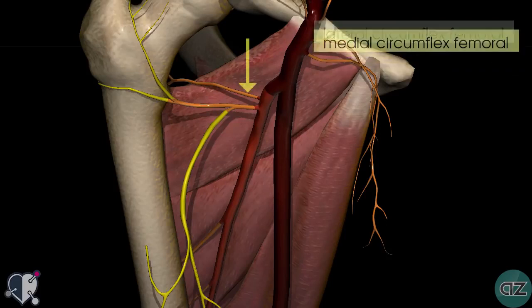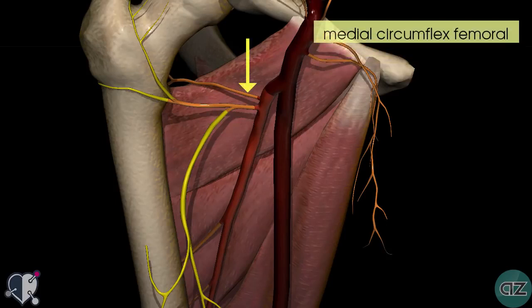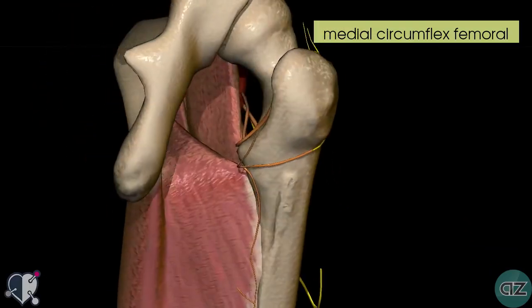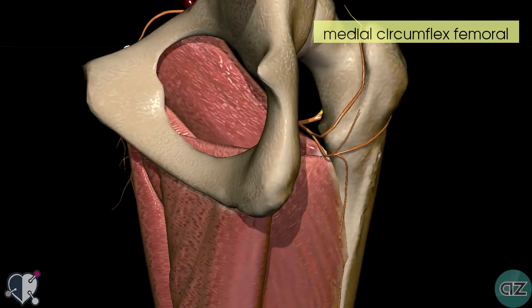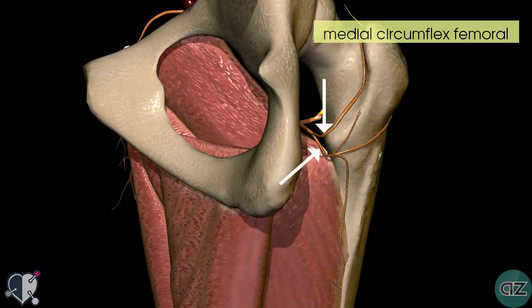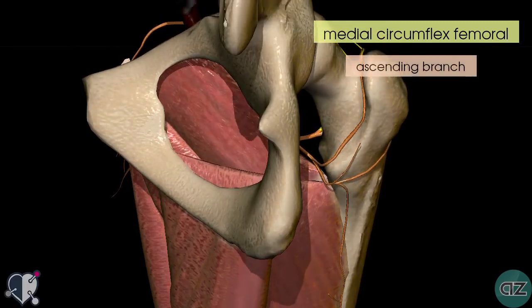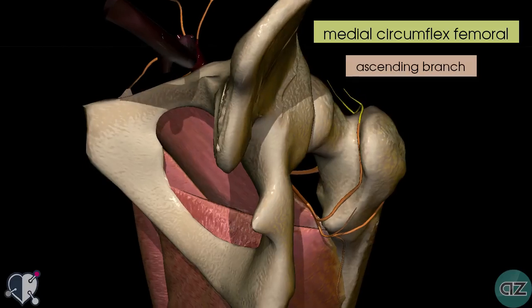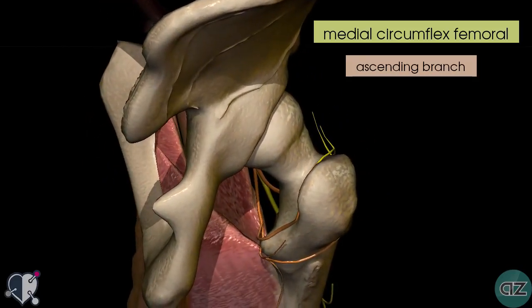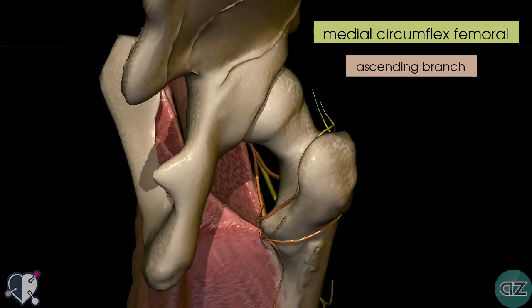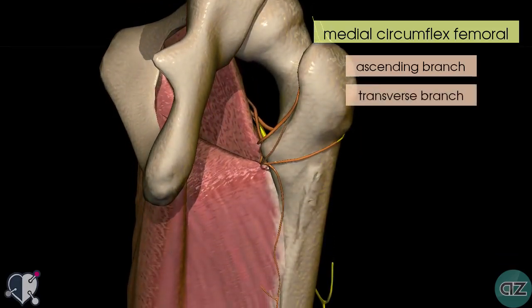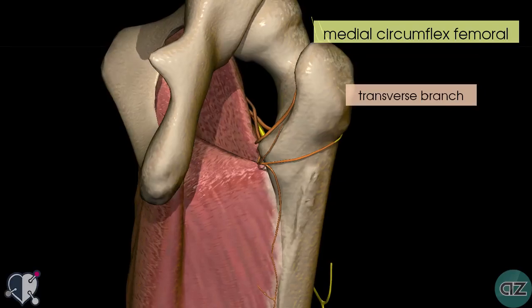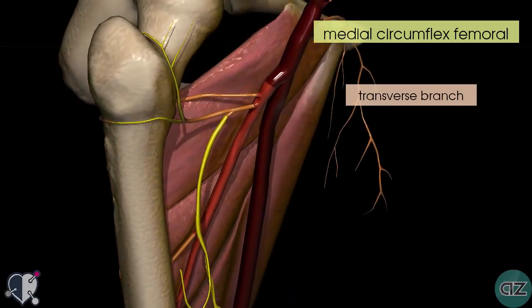The medial circumflex artery comes off more posteriorly from the profunda femoris artery. Rotating the model, you can see it has two branches. There's an ascending branch which anastomoses with the ascending branch of the lateral circumflex artery, and there's also a transverse branch which anastomoses with the transverse branch of the lateral circumflex artery.